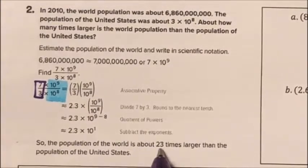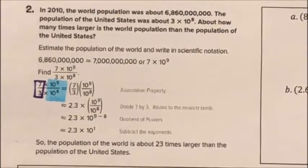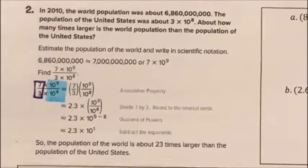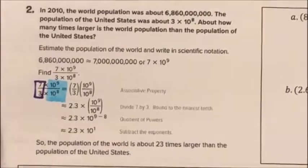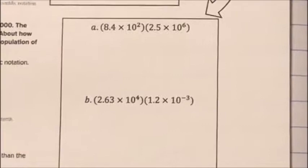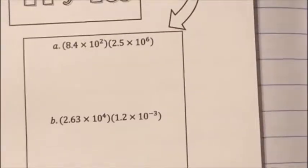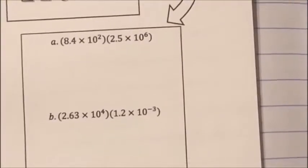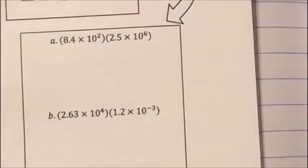Since 10 to the first just moves the decimal over one place, that's where I get 23 from. There are three try-it problems here. Go ahead, pause the video, try out the problems, and when you come back we'll go over the answers together.